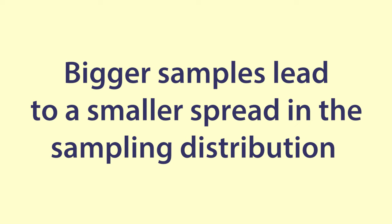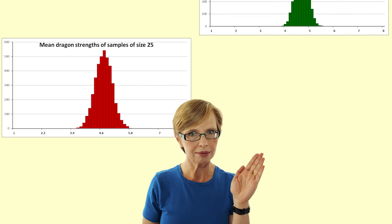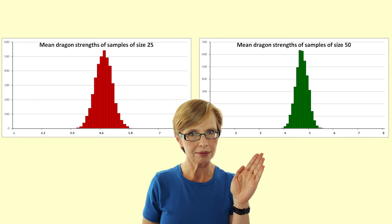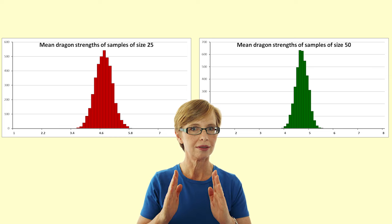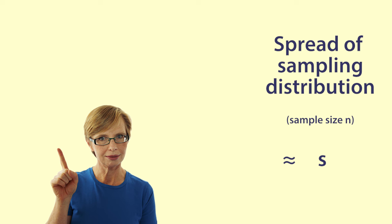Aspect four: Bigger samples lead to a smaller spread in the sampling distribution. The bigger the sample, the less likely it is that all of the values will be small or that all of the values will be large so that the chance of extreme values is reduced. Here is a graph showing the spread of sample means of strengths of dragons from samples of size 25. And here is a graph showing the spread of sample means of strengths of dragons from samples of size 50. You can see that the spread reduces as the sample size increases. The spread of the sampling distribution is related to the square root of the sample size.